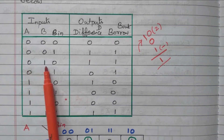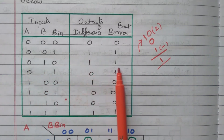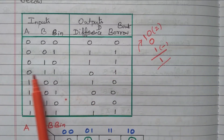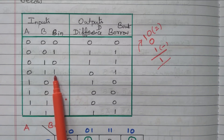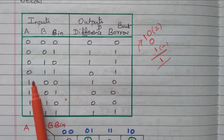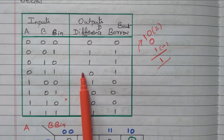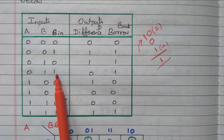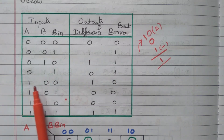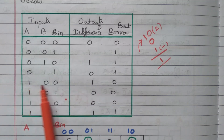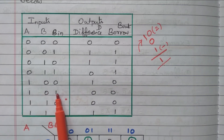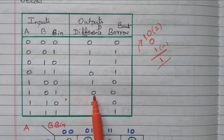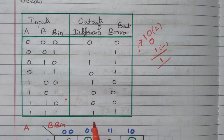Similarly, for 0 1 0, it is the same case: 0 minus 1 gives difference = 1 and borrow = 1. For 0 1 1: 0 minus 1 gives difference 1 and borrow 1, but again we need to subtract 1 more, so the difference becomes 0 and borrow remains 1. For 1 0 0: 1 minus 0 is simply 1, borrow is 0. Similarly 1 0 1: 1 minus 0 is 1, borrow is 0, then minus 1 gives difference 0. For 1 1 0: 1 minus 1 is 0, difference is 0, borrow is 0.